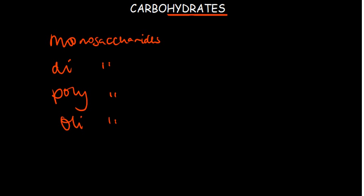Monosaccharides are single sugar units — they are actually the basic building blocks of all carbohydrates. Mono means one, di means two, poly means ten to infinity approximately, and oligosaccharides cover three to ten units. These numbers refer to how many monosaccharide units are joined together.